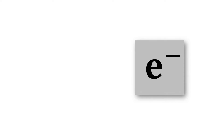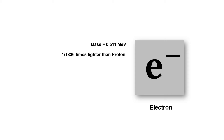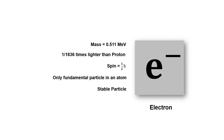The first charged lepton is the electron. The electron is a negatively charged particle with a mass of 0.511 mega electron volts — that is 1/1836 times the mass of the proton. The electron is the only elementary particle that forms an atom. Three subatomic particles — proton, neutron, and electron — are required to form an atom, but only the electron is elementary. Proton and neutron are not elementary particles; they are made up of quarks.